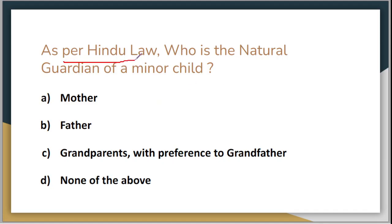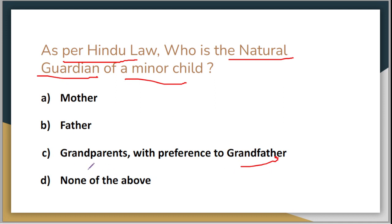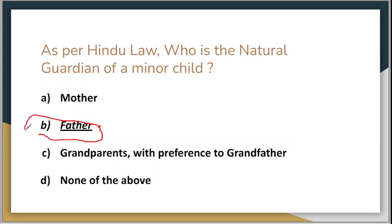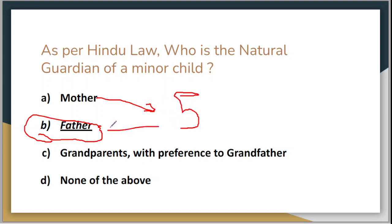Next question: as per Hindu law, who is the natural guardian of a minor child? Option A is mother, Option B is father, Option C is grandparents with preference to grandfather, and Option D is none of the above. The correct answer is Option B — father. However, if the child is below the age of five years, the mother is generally considered the sole guardian. If the child is above five years, the father is given preference in terms of natural guardianship under Hindu law.